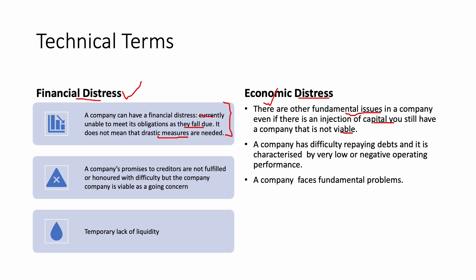Simply put, when we talk about financial distress, there is a temporary lack of liquidity. It is just an issue of cash flow problems to the extent that when some creditors need their money, the company is unable to actually fulfill that promise. But of course, the company to this extent is able to operate as a going concern, meaning that it can continue operating for a foreseeable future.